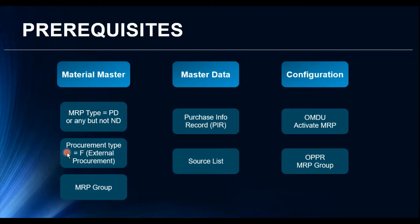We also have the MRP group, which is not mandatory but holds the complete details of the planning parameters for the material. Then with the creation of master data — specifically the purchase info record (PIR) — which holds the details of the material: who is the supplier, what are the INCO terms, the purchase terms, and the lot size quantities you would like to procure from that particular supplier.